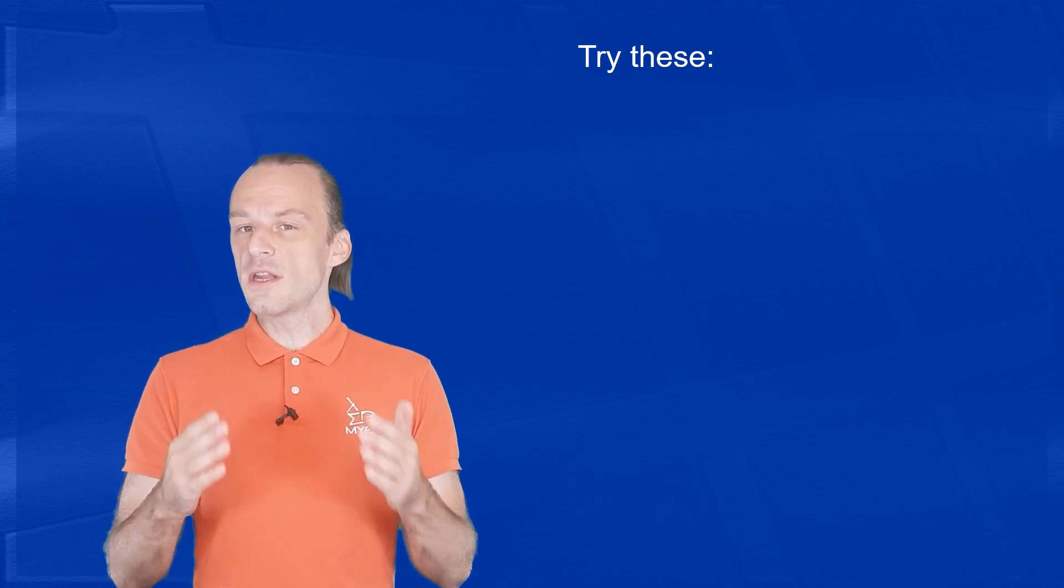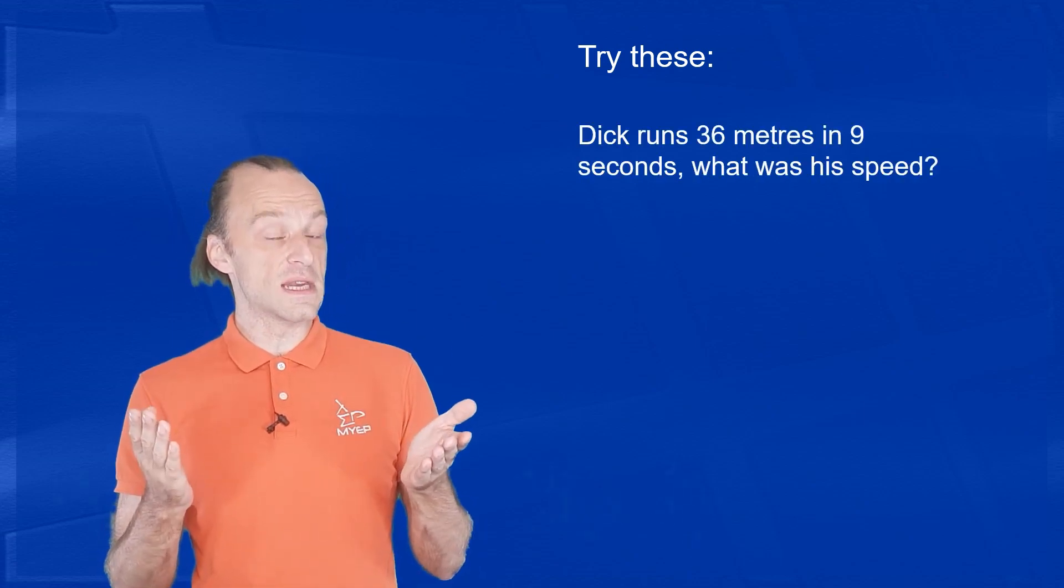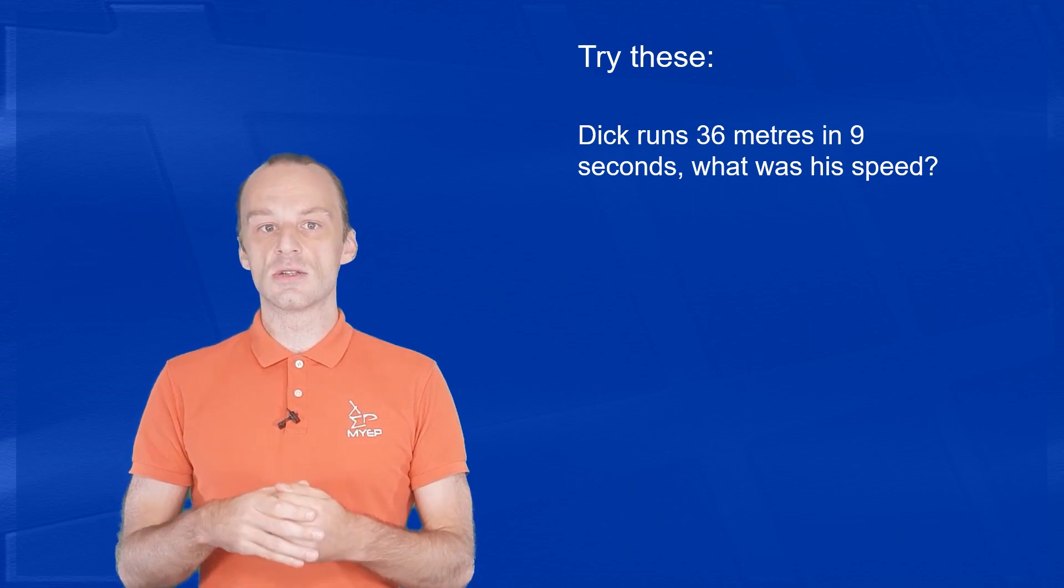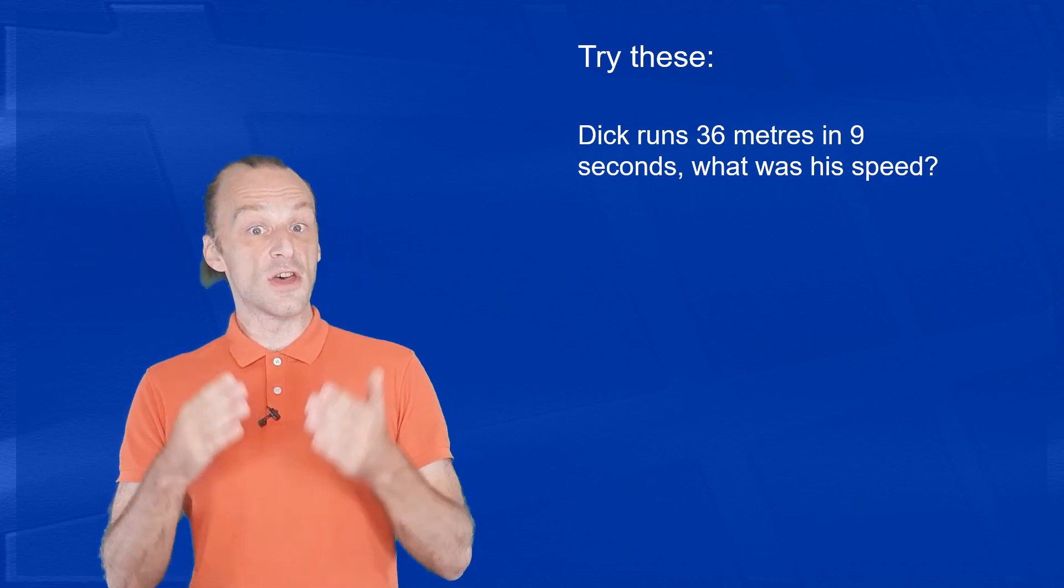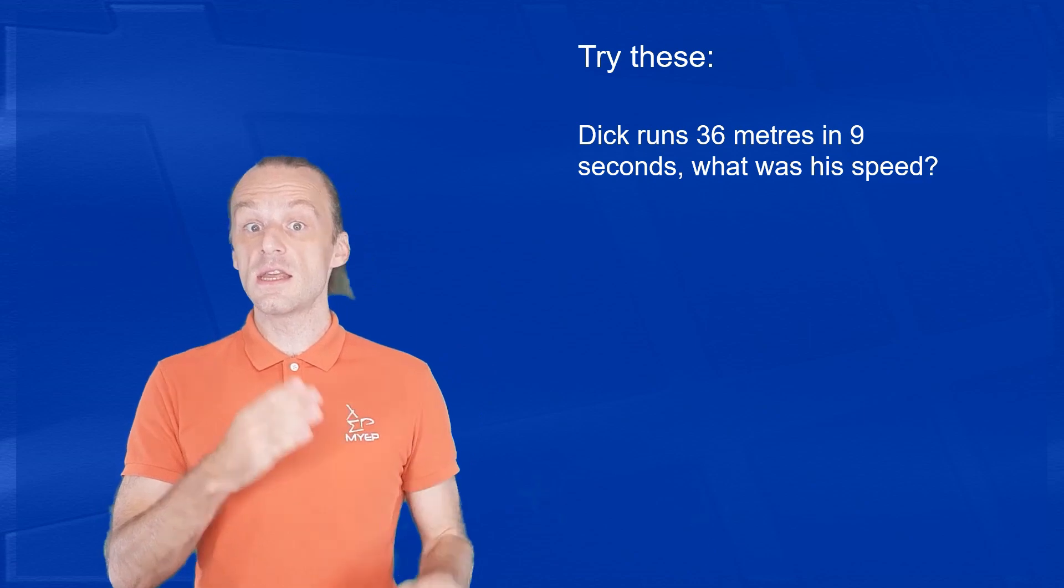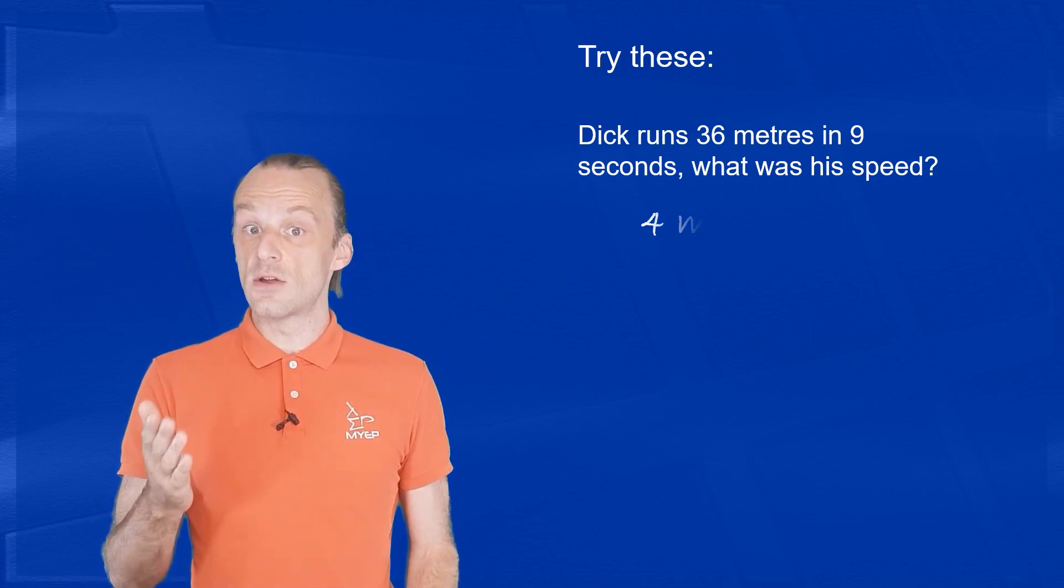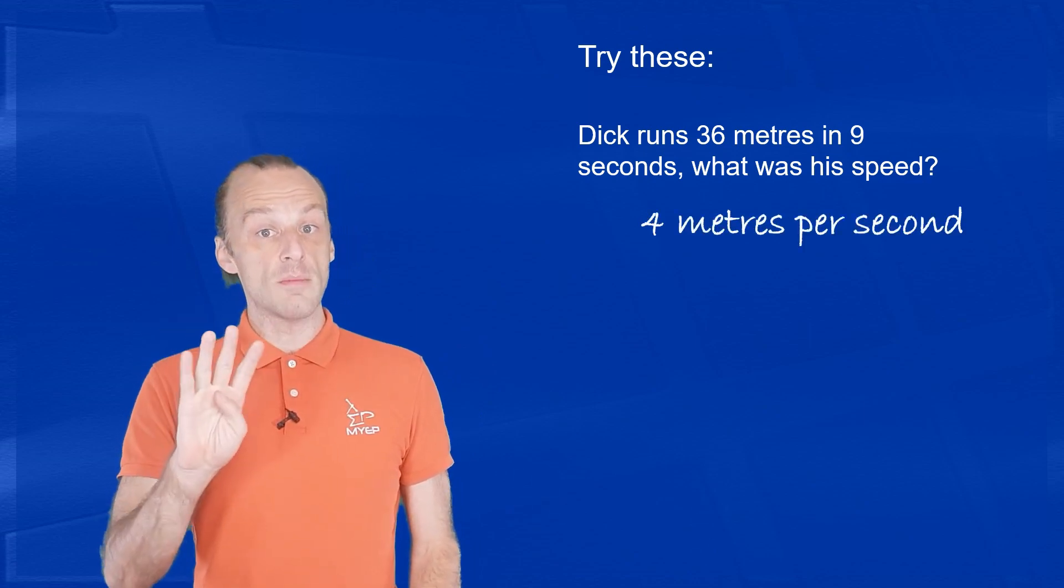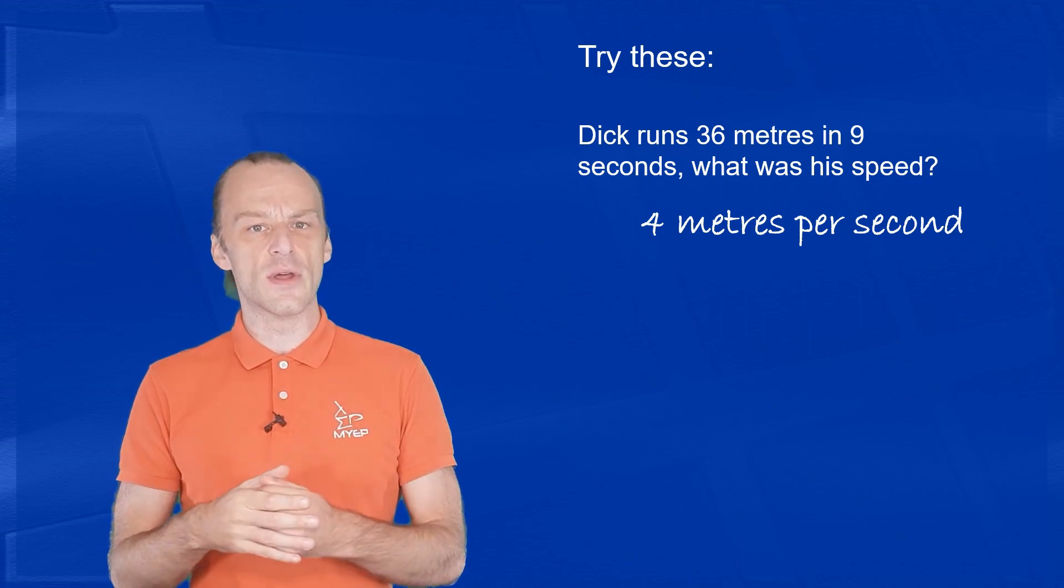Let's try some examples. Pause the video if you need time to think. What if Dick runs 36 meters in nine seconds? What was his speed then? 36 divided by nine is four. So Dick's speed on this second run is four meters per second, a bit slower this time.